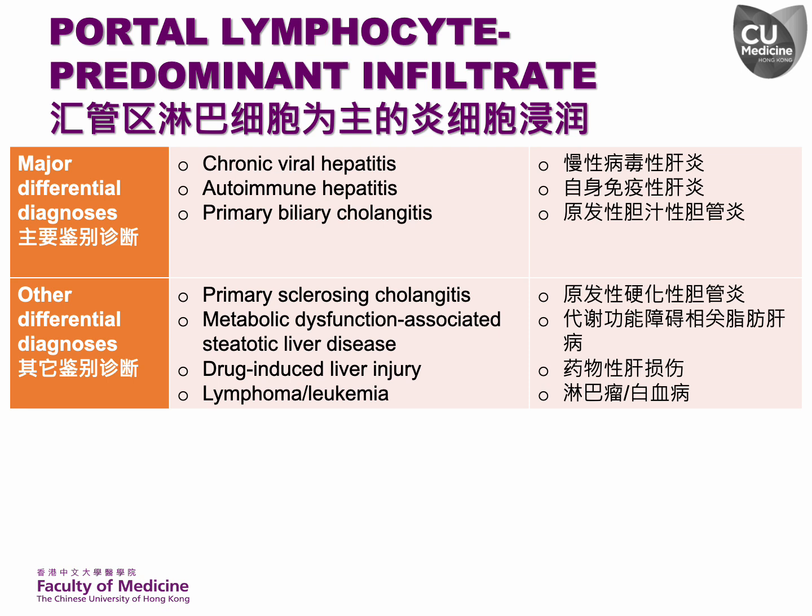Portal lymphoid follicles are a distinctive feature of chronic hepatitis C, but they can also be present in various other liver diseases including chronic hepatitis B, autoimmune hepatitis, and primary biliary cholangiitis. To make a definitive diagnosis, it is crucial to identify other associated features.